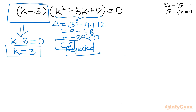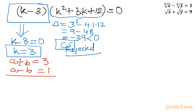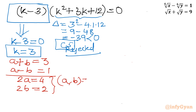Now, k was a plus b, so a plus b equals 3 and the second equation was a minus b equals 1. Adding both gives 2a equals 4, and subtracting both gives 2b equals 2. So the values (a, b) are (2, 1).